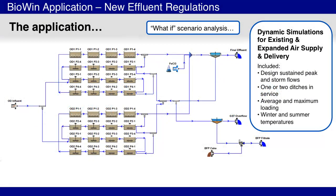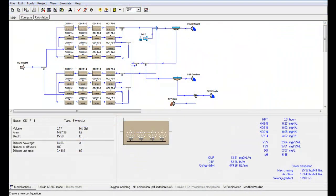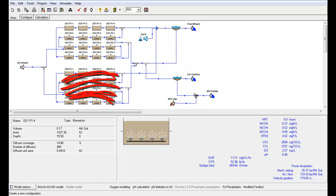Once the model was calibrated and predictive of the plant behavior, it was applied to investigate a number of scenarios of interest, including: whether the plant could meet new effluent objectives under peak flows, seasonal temperature impacts on plant performance, whether additional aeration capacity was required in the fourth pass, and prediction of plant effluent with one of the two ditches taken out of service.